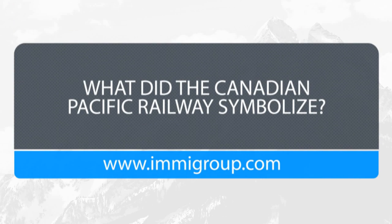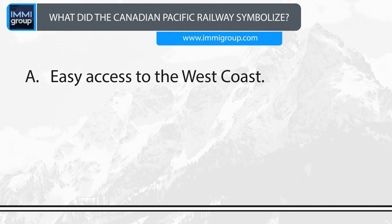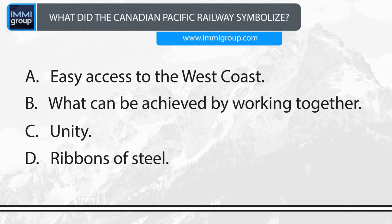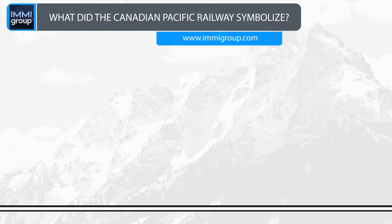What did the Canadian Pacific Railway symbolise? A. Easy access to the West Coast. B. What can be achieved by working together. C. Unity. D. Ribbons of Steel. Answer: Unity.